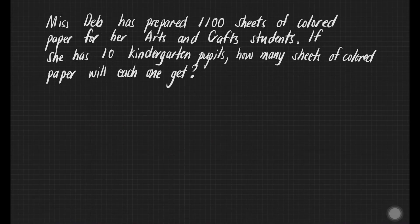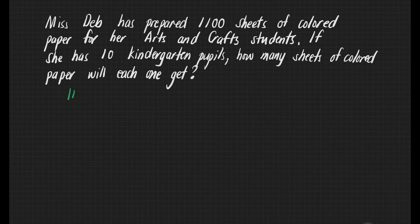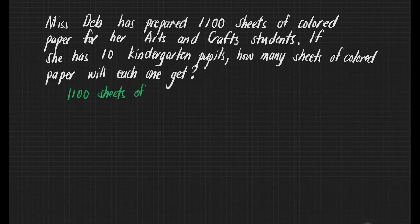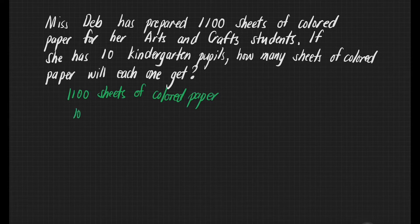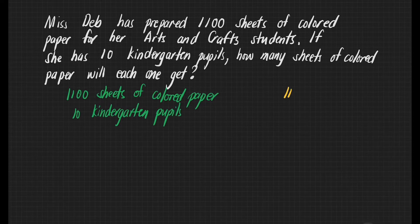We have an example here. Ms. Dev has prepared 1,100 sheets of colored paper for her arts and crafts students. If she has 10 kindergarten pupils, how many sheets of colored paper will each one get? We are given 1,100 sheets of colored paper and 10 kindergarten pupils. Our division sentence is 1,100 divided by 10 is equal to blank.